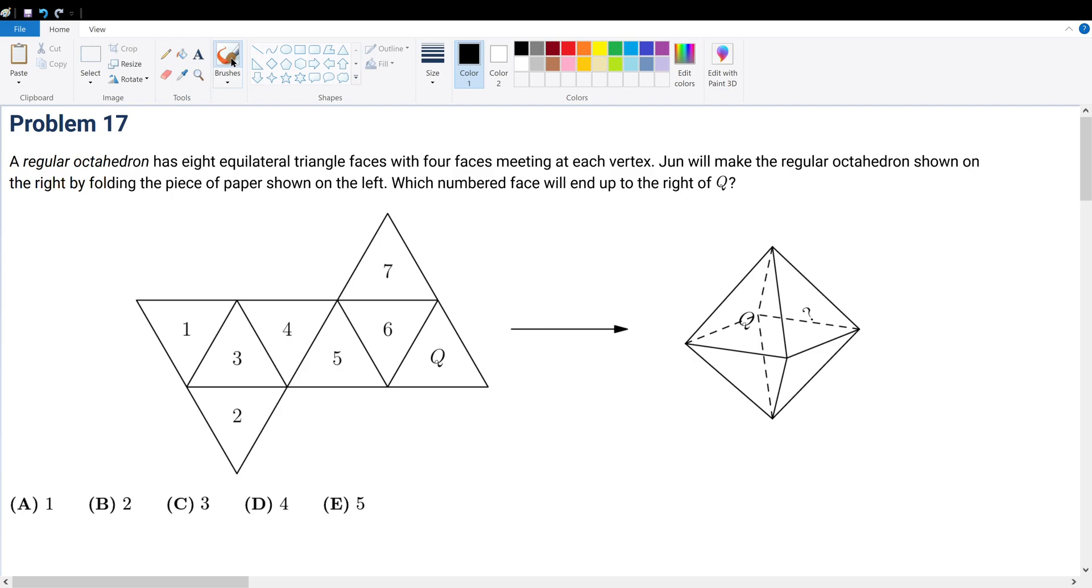Problem 17. A regular octagon has 8 equilateral triangle faces with 4 faces meeting at each vertex. June will make the regular octagon shown on the right by folding the piece of paper shown on the left. Which numbered face will end up to the right of Q?